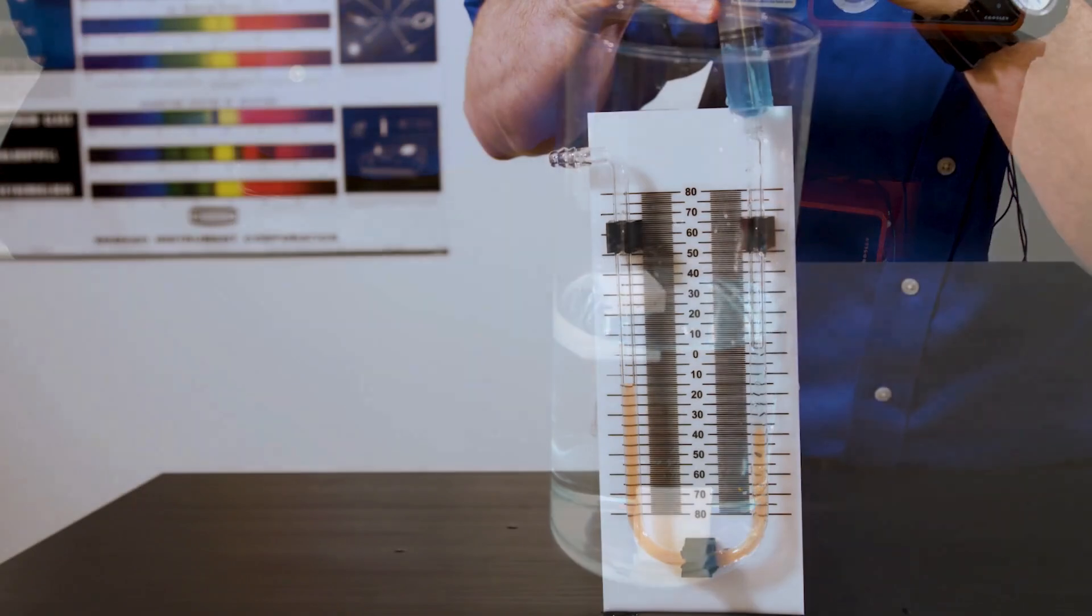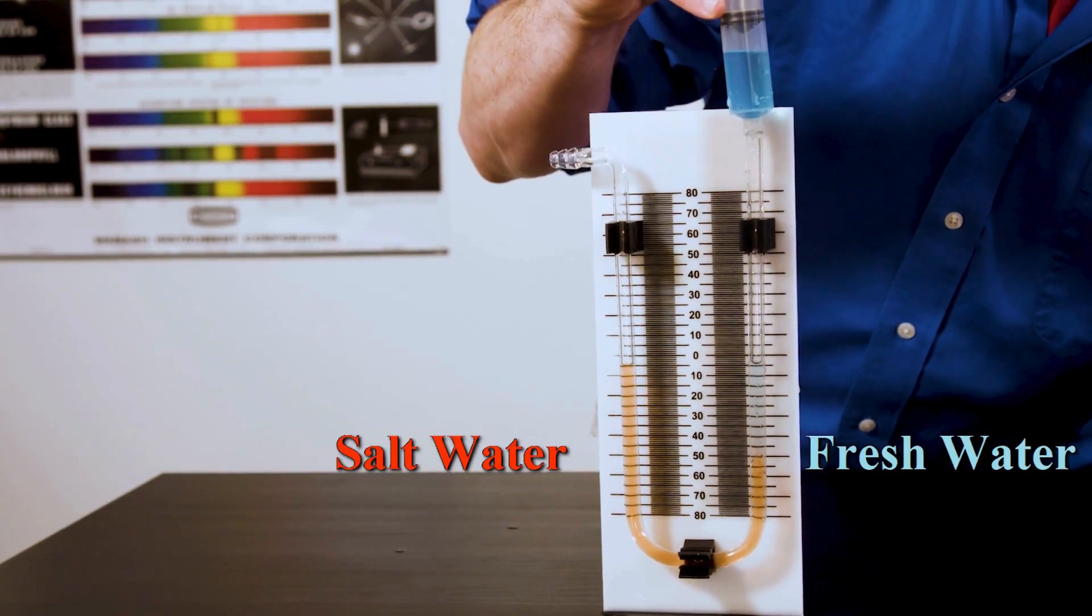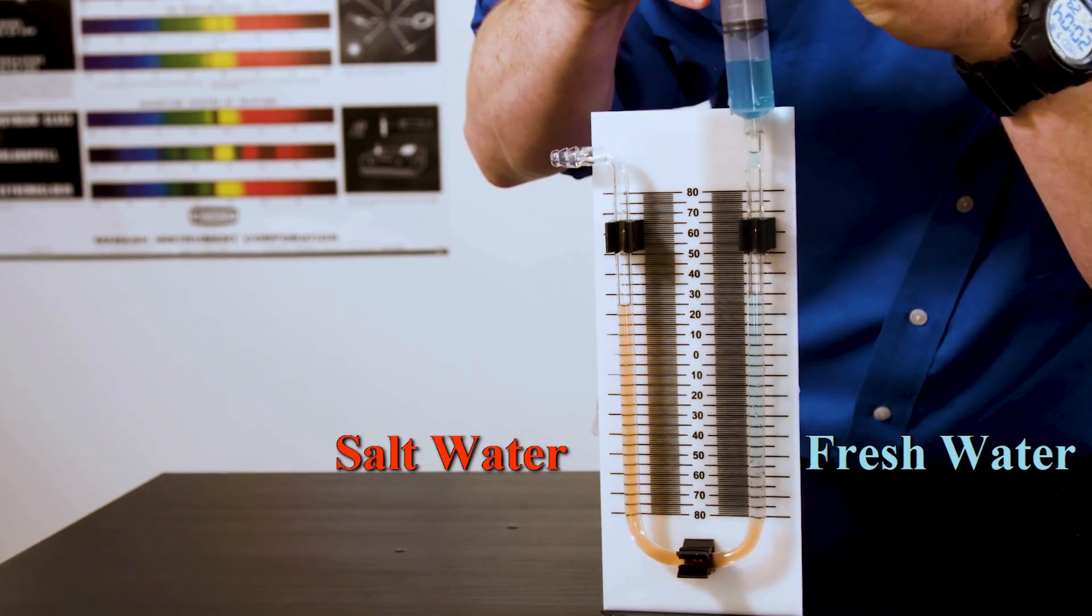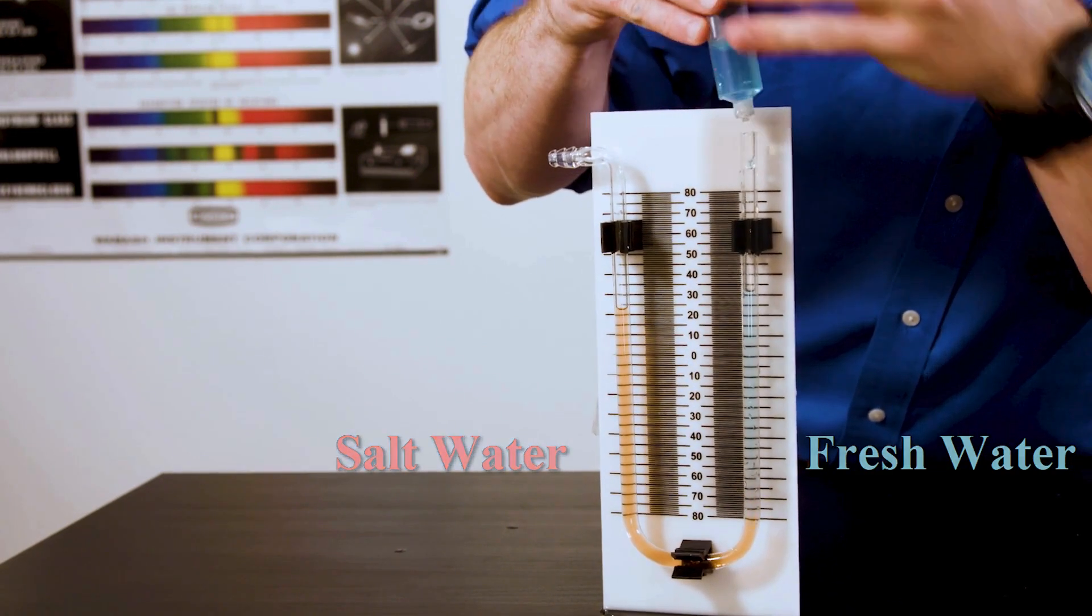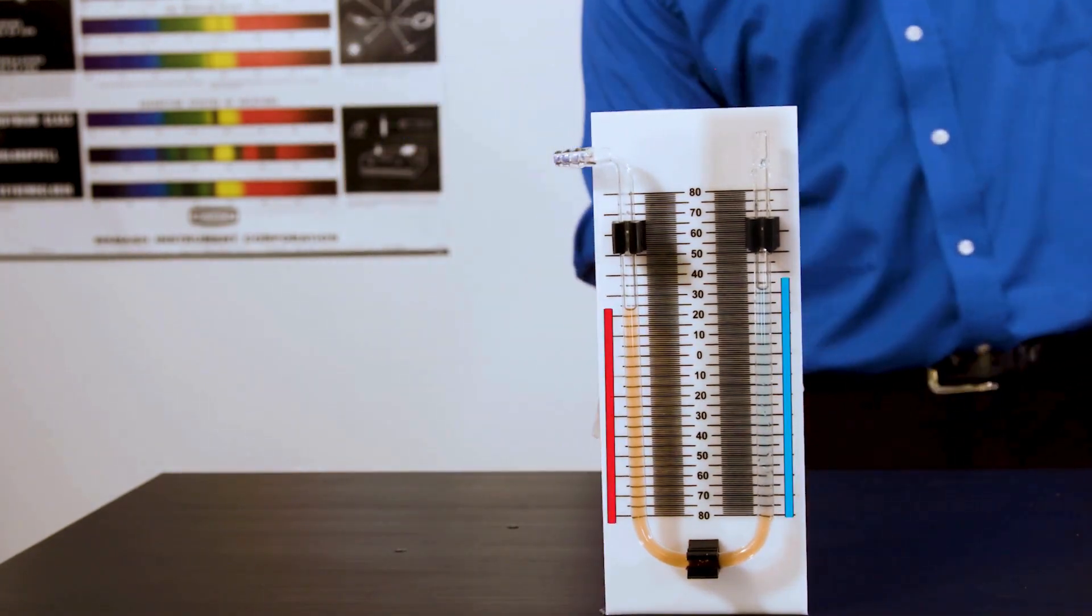For a liquids example, comparing the density of salt water to regular water can be done easily with a density manometer. It helps to keep the waters cold so that they don't mix quickly. The ratio is about 6 to 5 for fully saturated salt water.